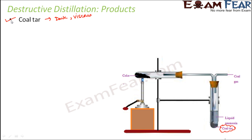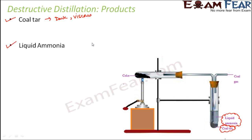Observing more closely, we see other vapors which form a colorless layer just above the coal tar. This colorless layer is called liquid ammonia, because it has been found that this layer contains a lot of dissolved ammonia. That's how we get liquid ammonia from coal.